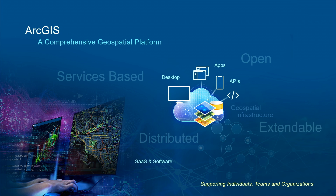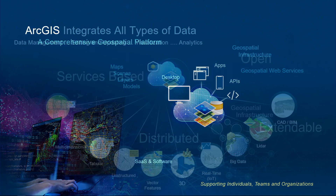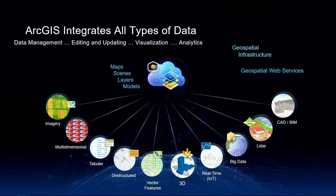ArcGIS is a comprehensive geospatial platform. It's open and services-based. It is distributed and extendable. It's available as both software and SaaS. ArcGIS integrates all types of data — of course the traditional geospatial data like imagery and vector features, but also tabular data, unstructured data, real-time data, and BIM.